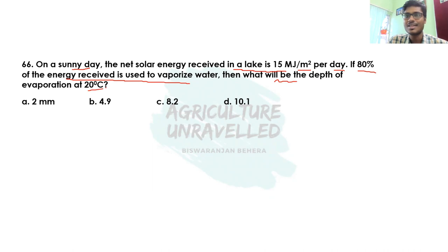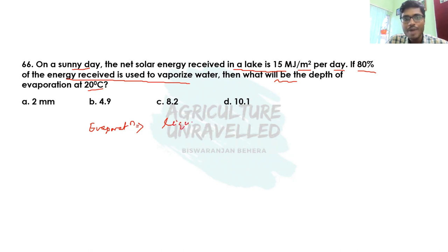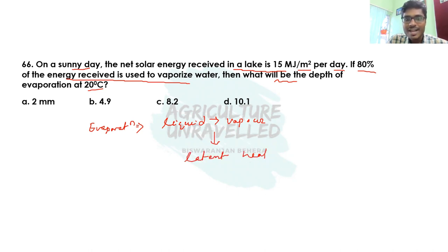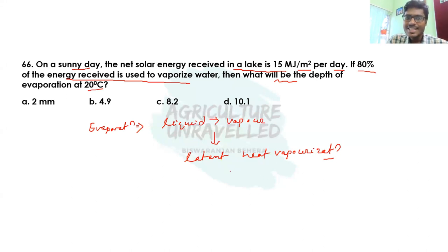Before solving this problem we should understand what evaporation is. Evaporation is a process in which water is converted from liquid state to vapor or gaseous state. For this evaporation process, energy or heat is needed, and this energy is known as latent heat of vaporization. Latent heat of vaporization is the energy needed for converting water from liquid form to vapor form.